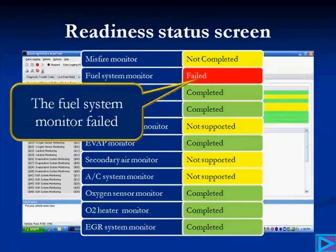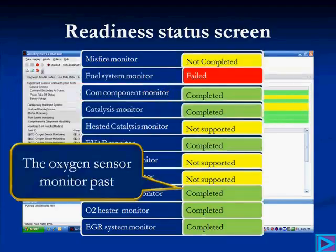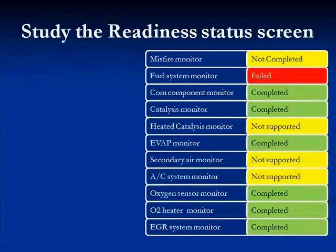When we look here, the fuel system monitor failed — it means it's running too rich or too lean. From this monitor status screen, we can't tell if it's running too rich or too lean; we only know that we need to go test the fuel system. The oxygen sensor monitor passed and it's completed. Think about having a drivability concern in your service bay, on the readiness screen, seeing that the oxygen sensor monitor passed but the fuel system failed.